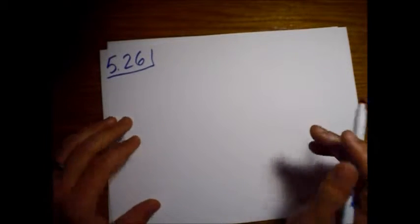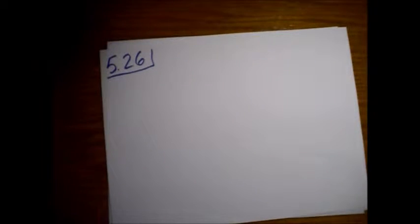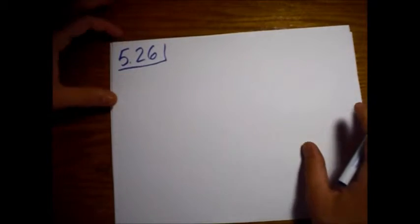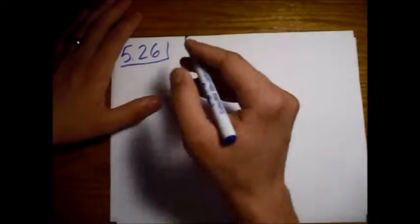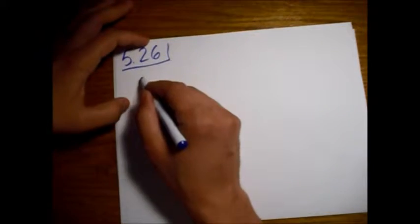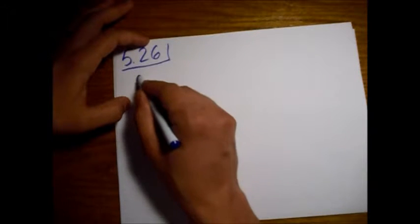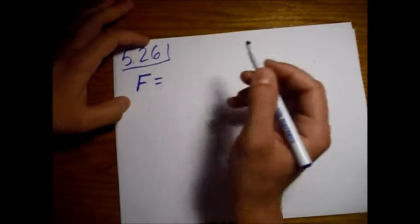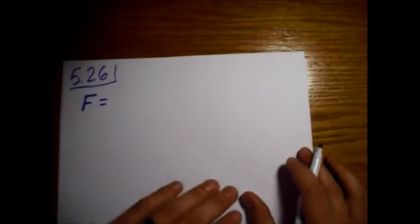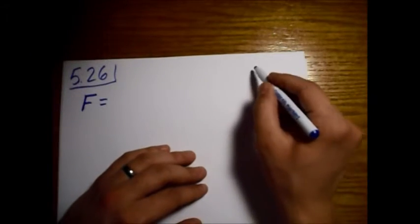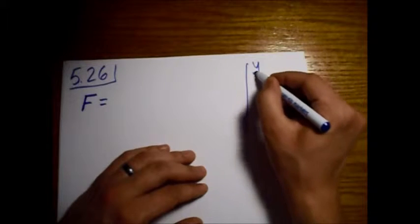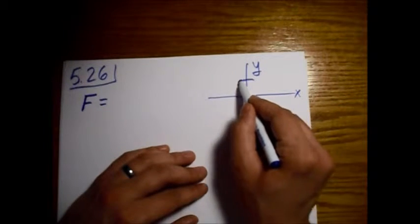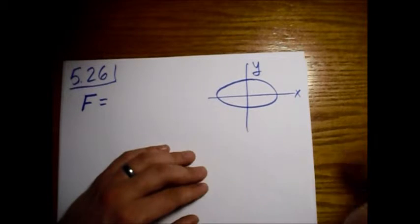I'm going to try and use the same way Griffiths writes this in the book. The function that we want to maximize is the area. Let's draw a picture real quick. Here we have y, here we have x, and we're going to have some sort of ellipse like this.